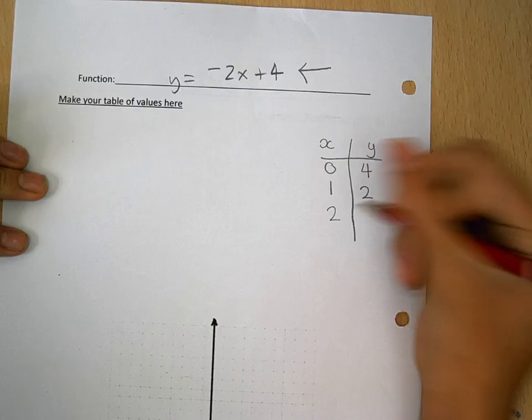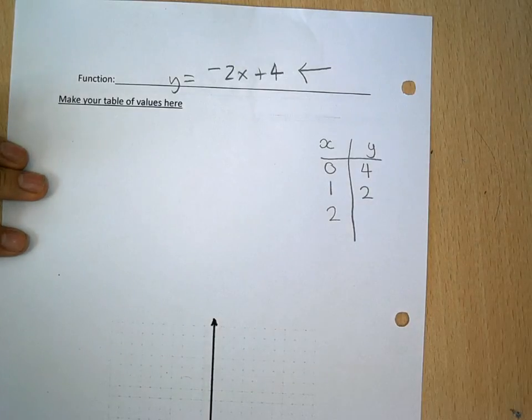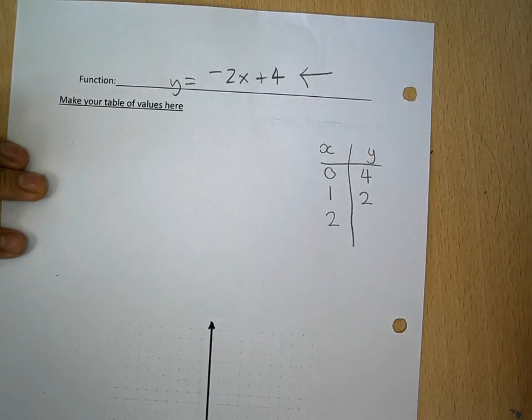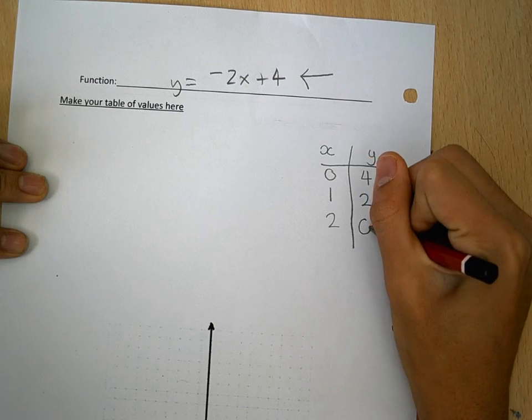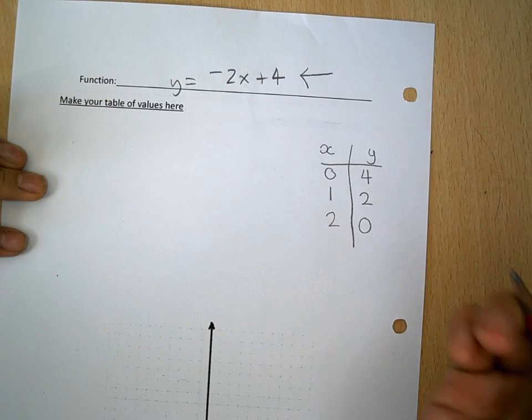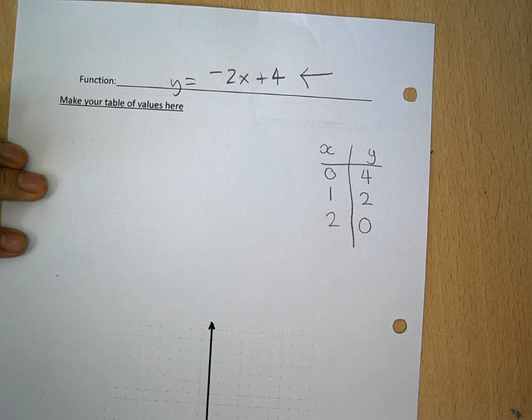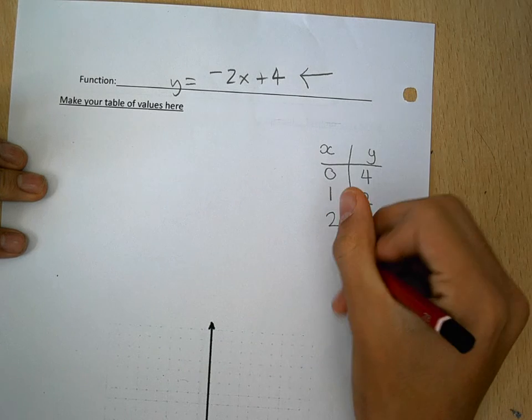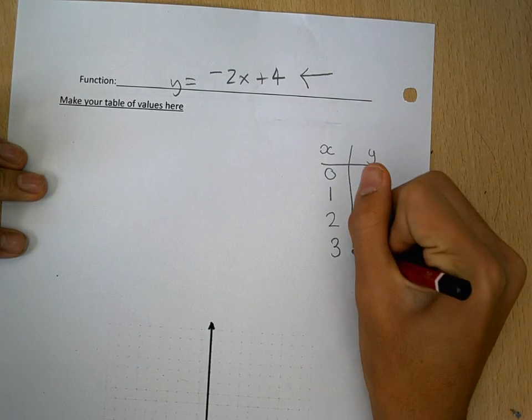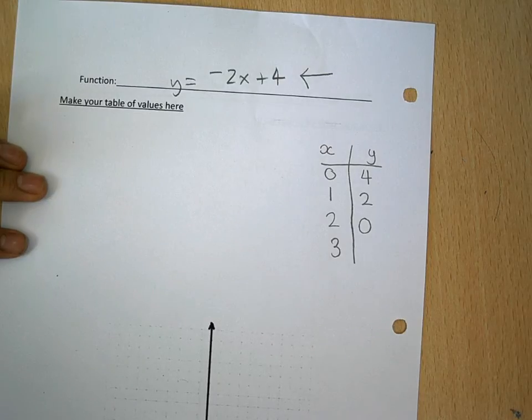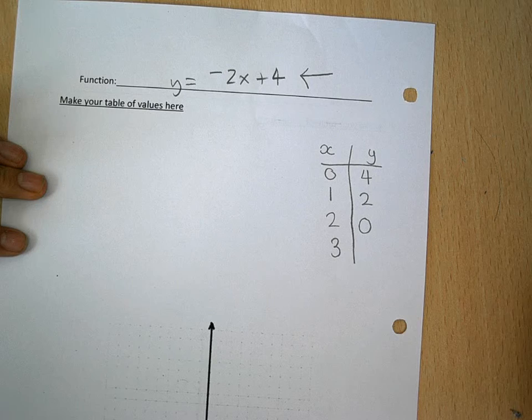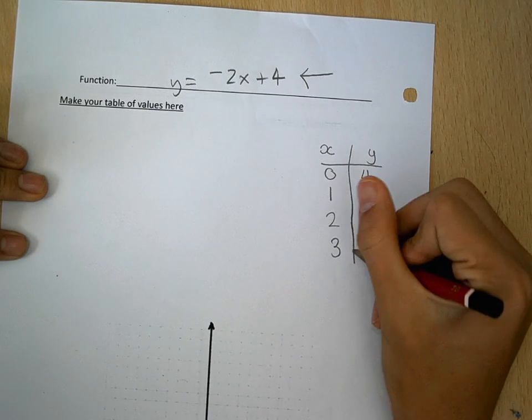Now I'm doing 2. Negative 2 times 2 equals negative 4, and negative 4 plus 4 equals 0. If the next number is 3, negative 2 times 3 equals negative 6, and negative 6 plus 4 equals negative 2.